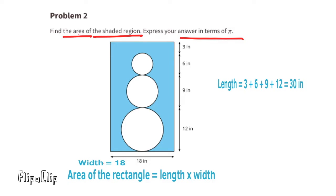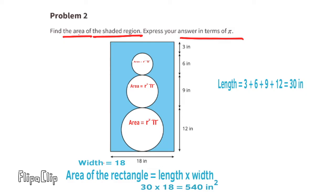To find the area of the rectangle, I'm going to multiply the length times the width. The total length is 30 inches and the width is 18 inches. 30 times 18 equals 540, so the area of this rectangle would be 540 inches squared.